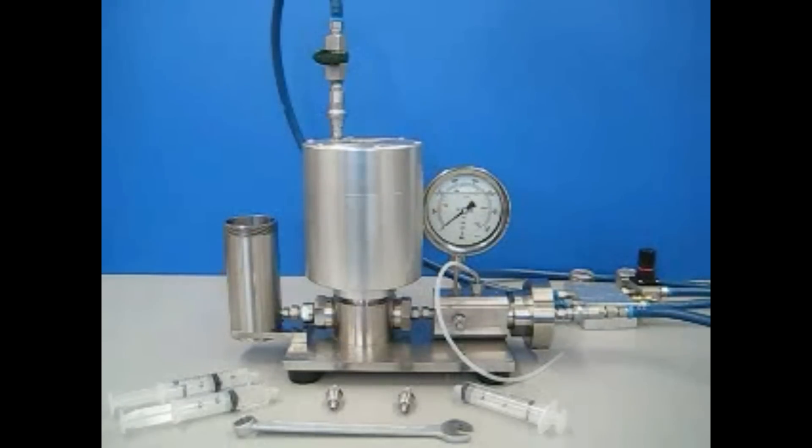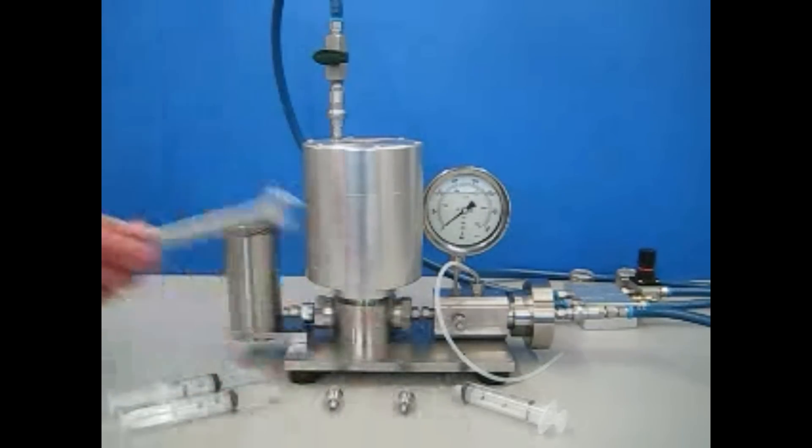What follows is a demonstration of a special application using the C5. There is a way to run many small samples through a C5 without adjusting the homogenizing pressure between samples. The sample cylinder and outlet tubing are removed from the C5.